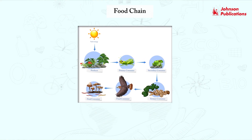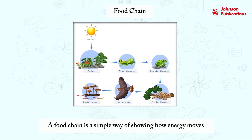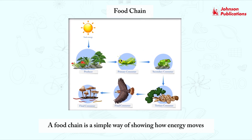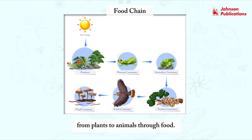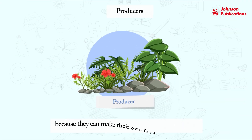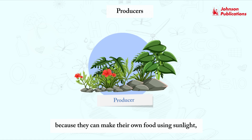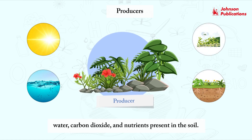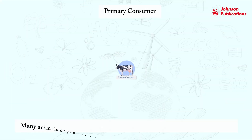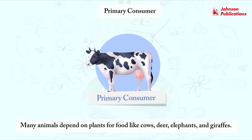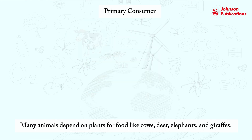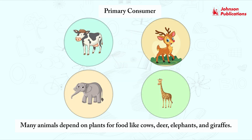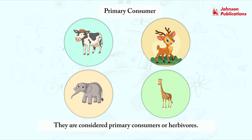Food chain. A food chain is a simple way of showing how energy moves from plants to animals through food. Producers: plants and trees are called producers because they can make their own food using sunlight, water, carbon dioxide and nutrients present in the soil. Primary consumers: many animals depend on plants for food, like cows, deer, elephants and giraffes. They are considered primary consumers or herbivores.